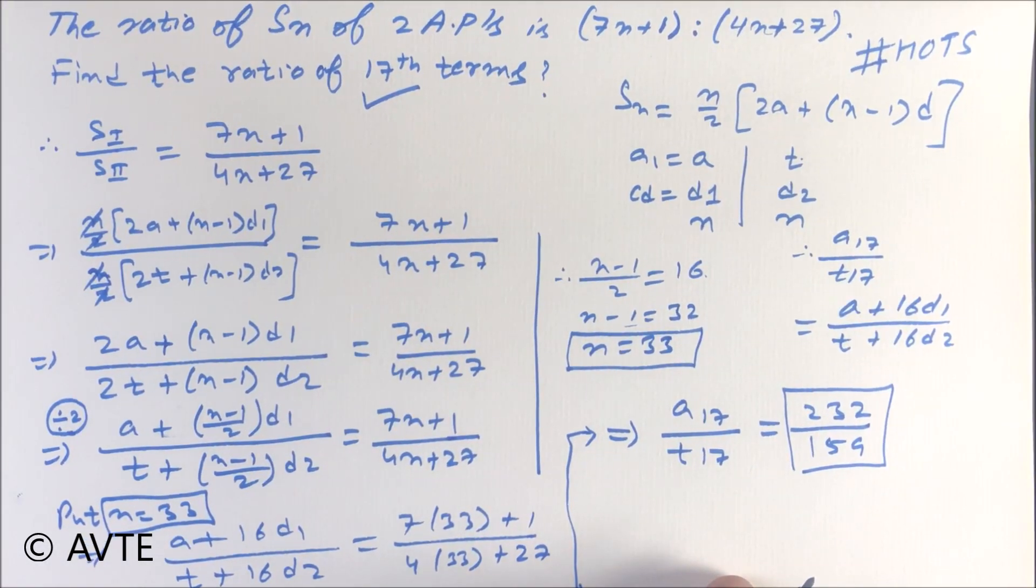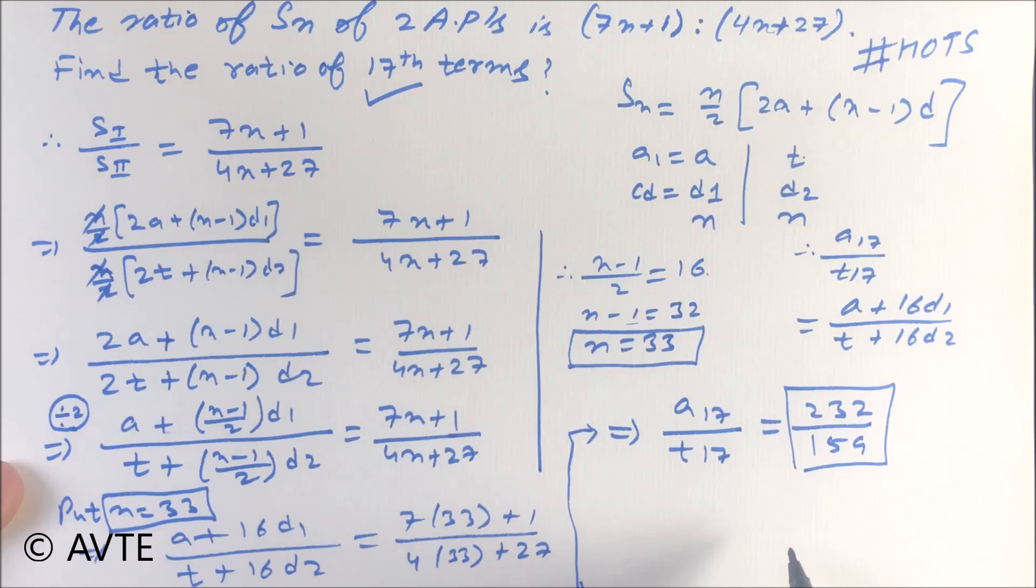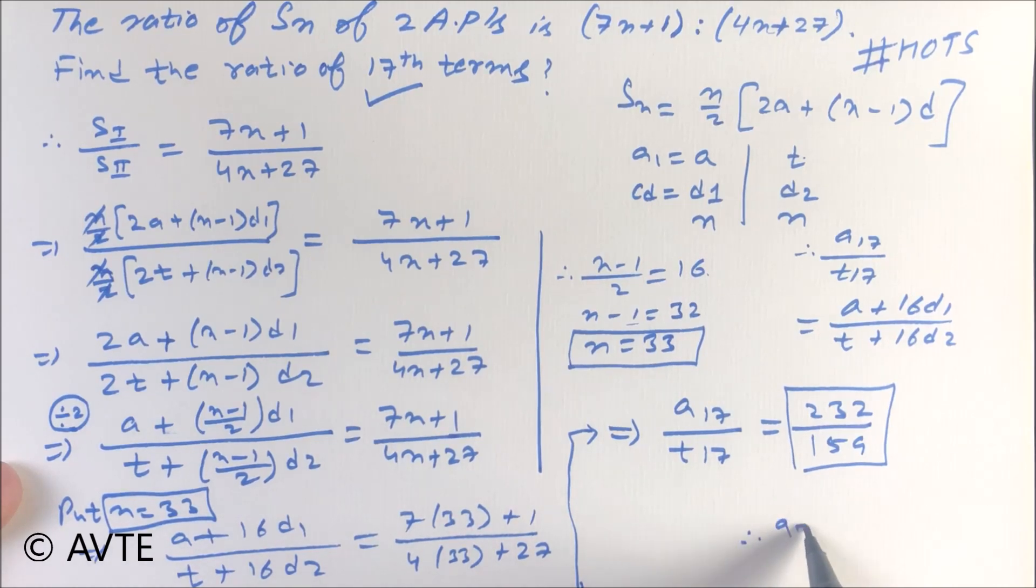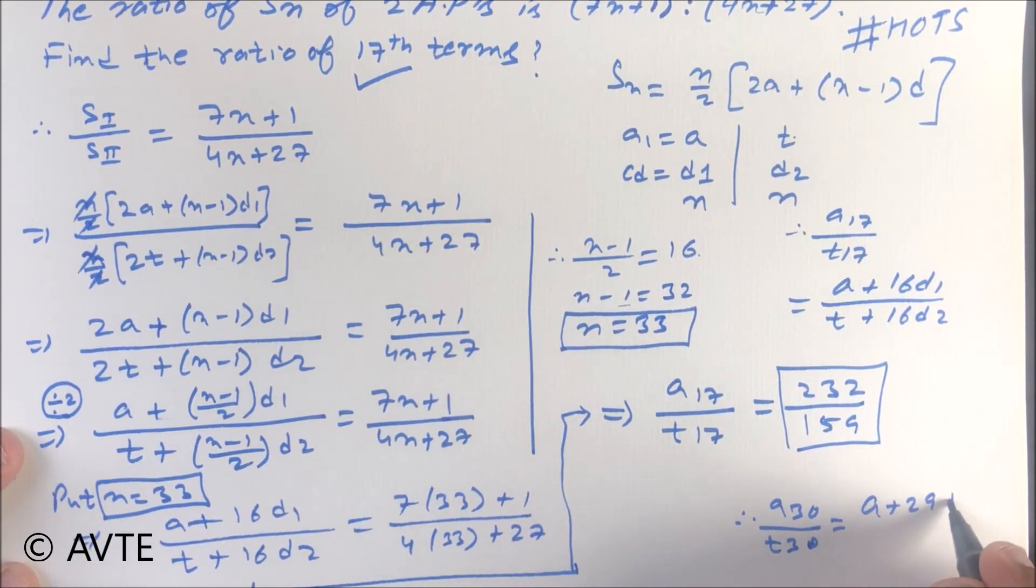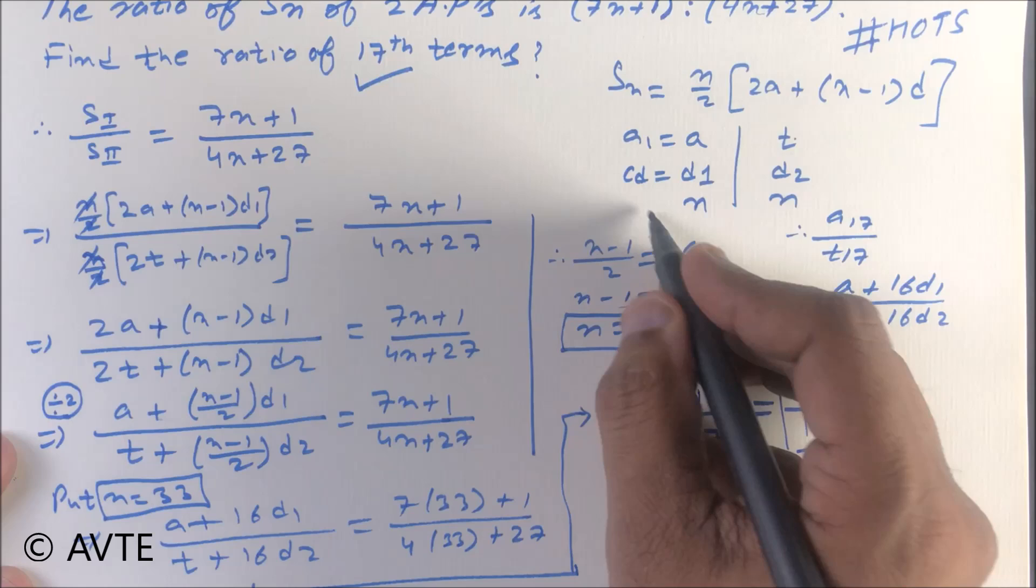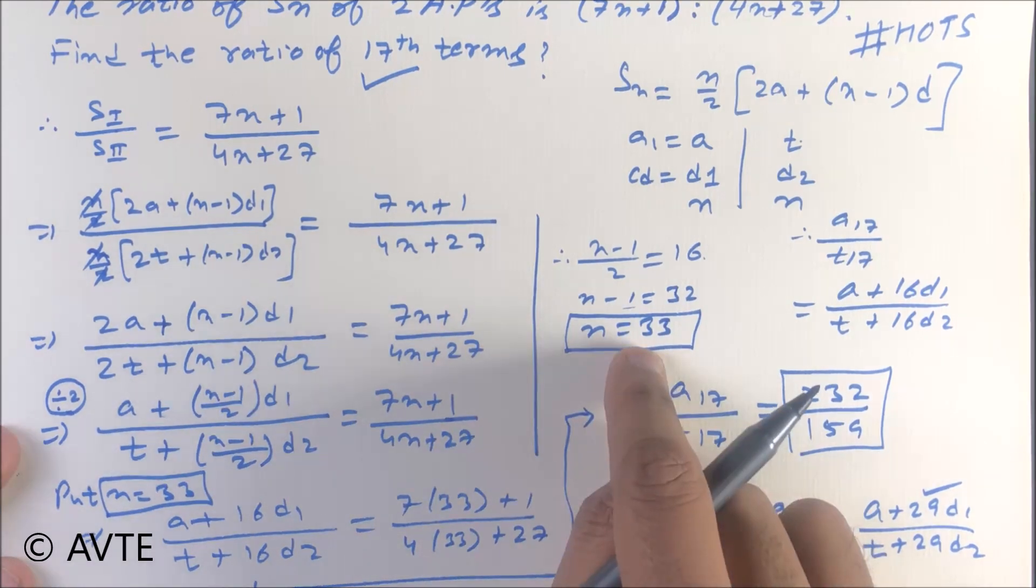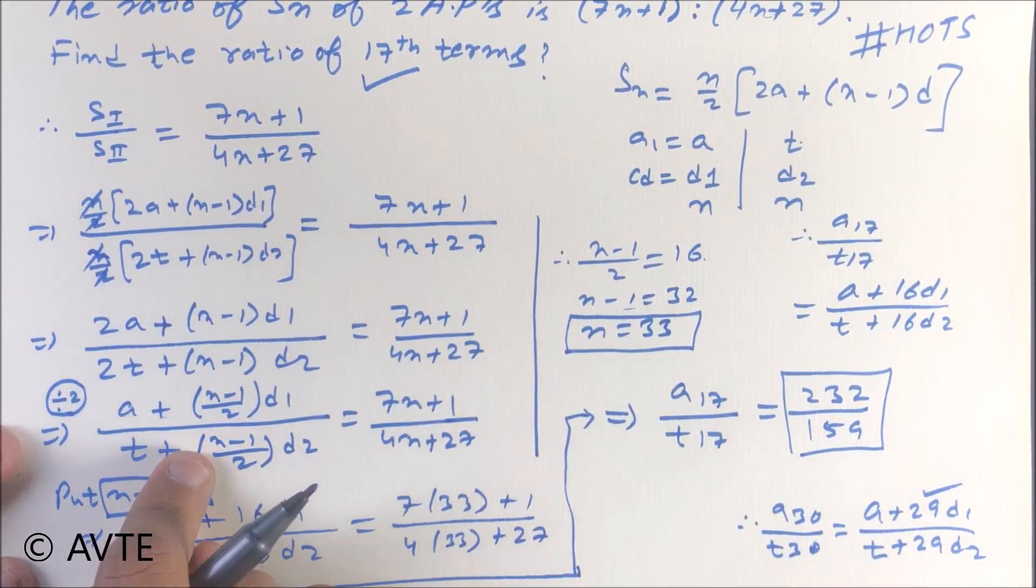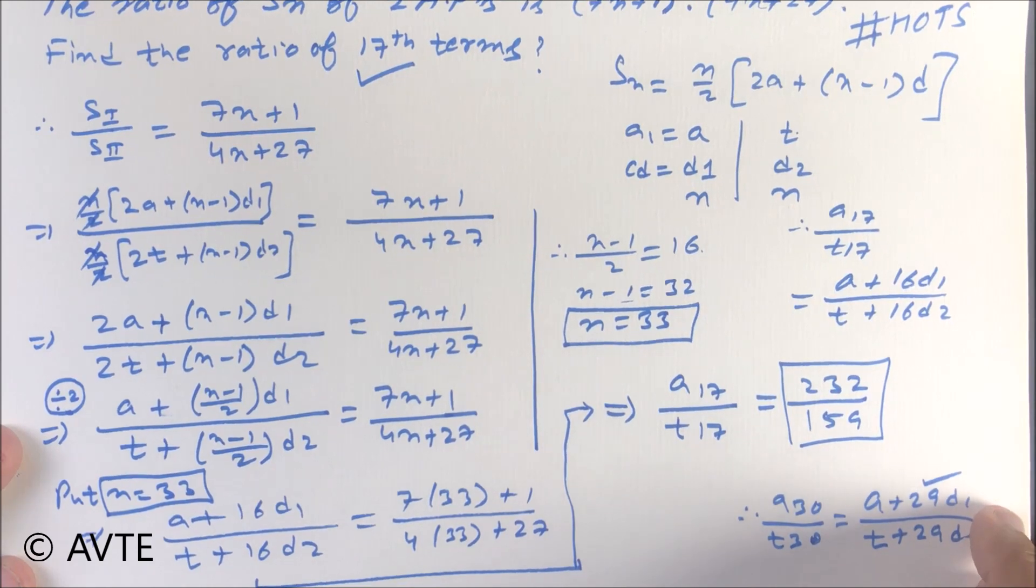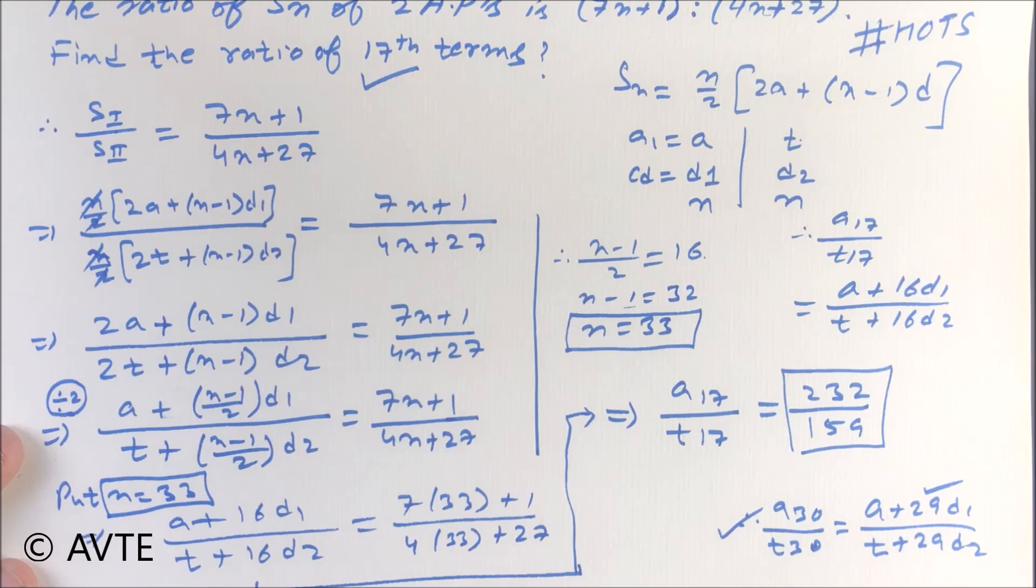I hope you understood. Suppose instead of a17, if we had to find a30, if we had to find a30 or t30, what would happen? a30 would be a plus 29 d1 and here we'd have t plus 29 d2. So we compare n minus 1 upon 2 equal to 29. And when we put the n value in the expression, we get a plus 29 d1 or t plus 29 d2 from here, which is a30 upon t30.